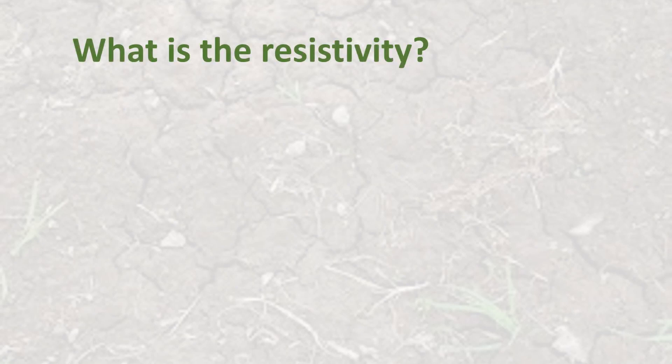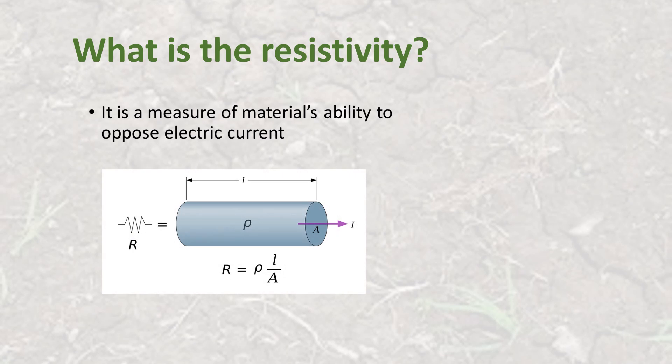The resistivity is a characteristic property of the material. It's a measure of material's ability to oppose electric current. We can calculate the resistivity of a material from its electrical resistance and its dimension, its length and its section, from this expression, and is expressed in ohms meters.